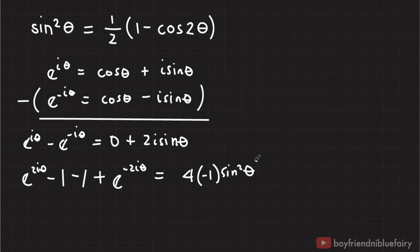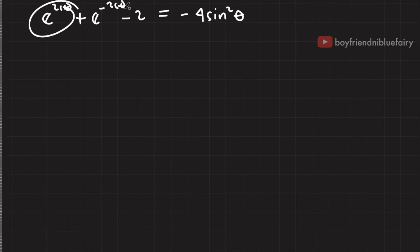Now I have this term sine squared. This is what I need. All I have to do is force the other side of the equation in terms of cosine. So I'll have e to the 2i theta plus e to the negative 2i theta minus two equals negative four sine squared theta. Let me expand these exponential terms in terms of cosine and sine using Euler's formula.